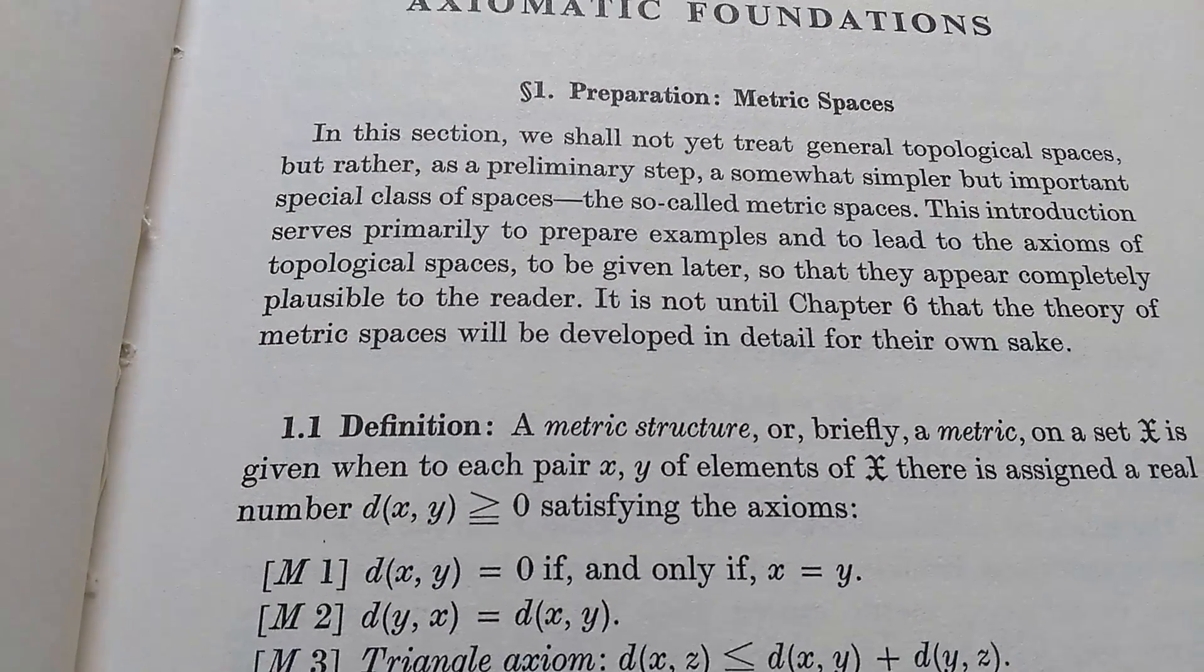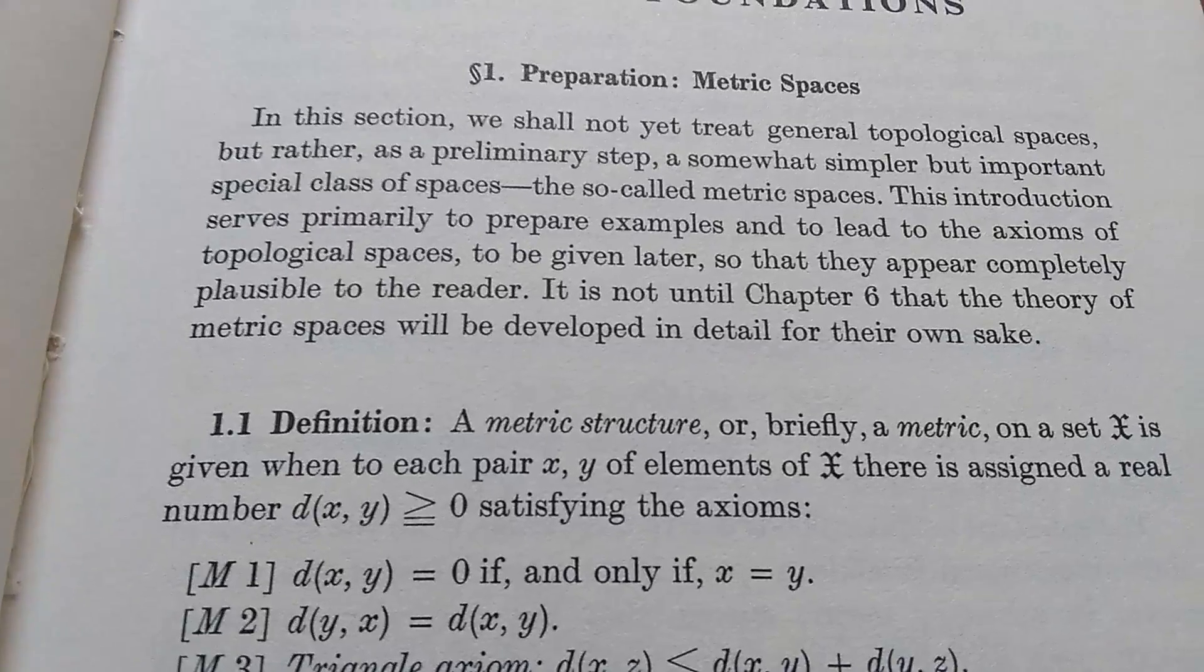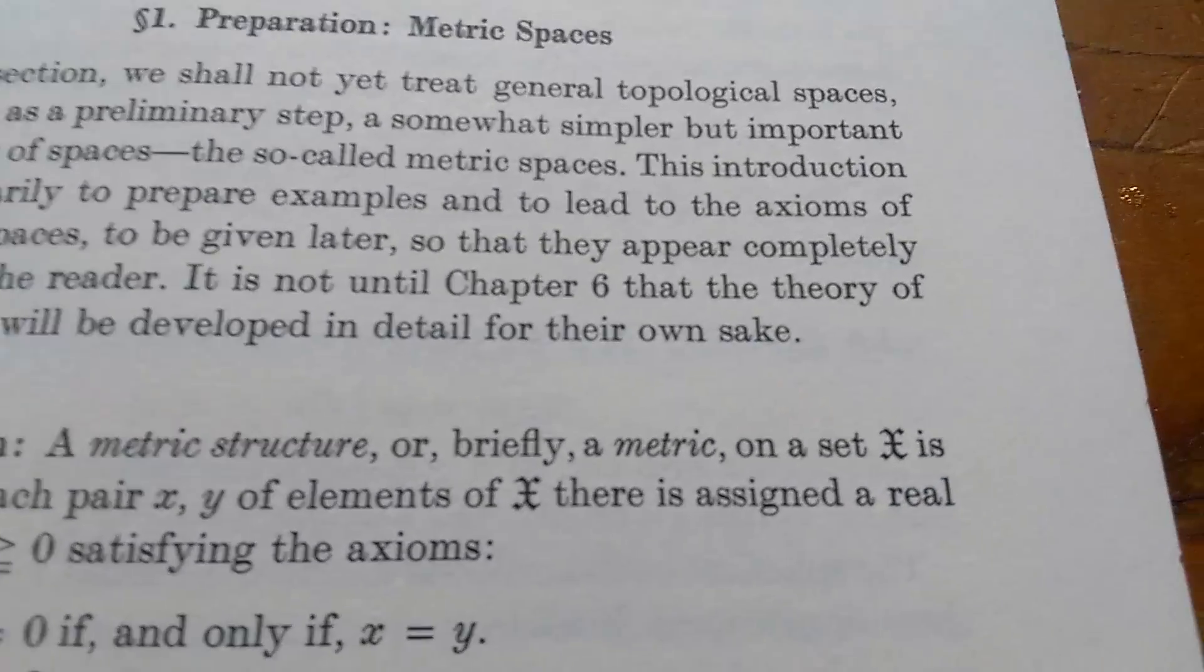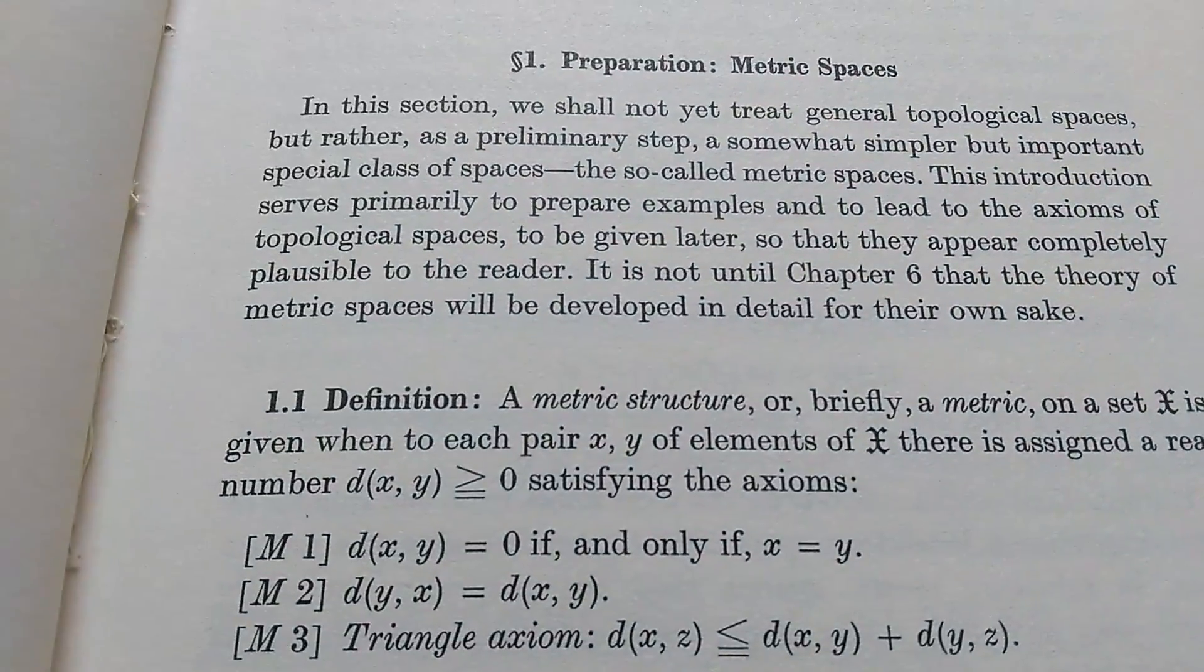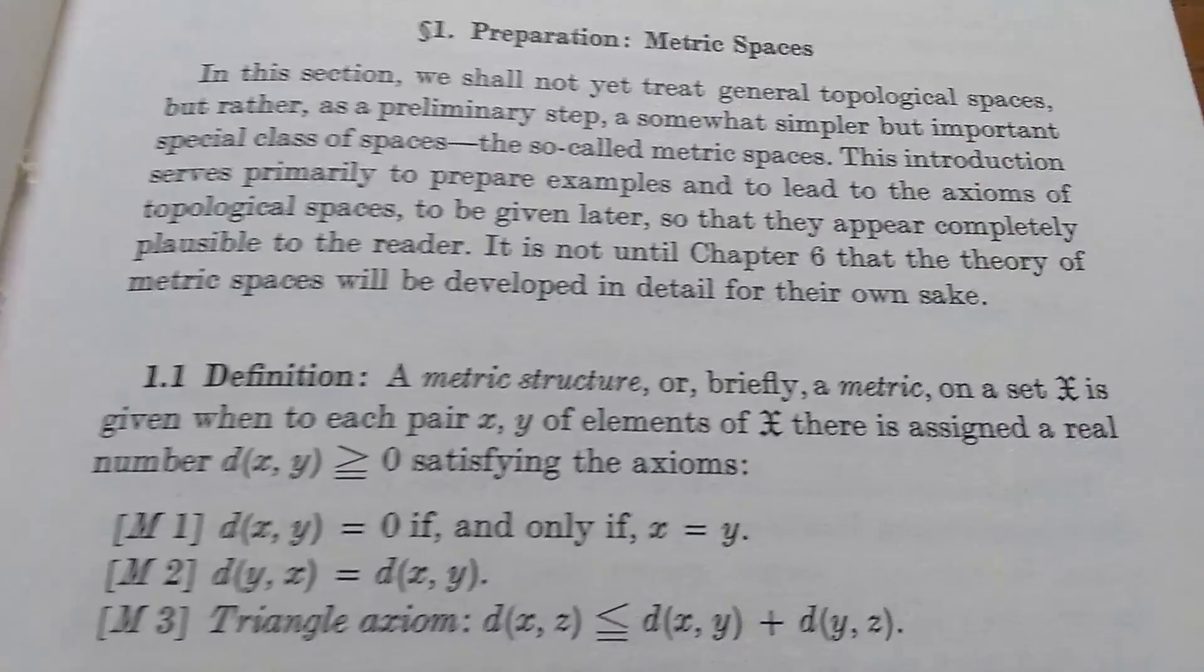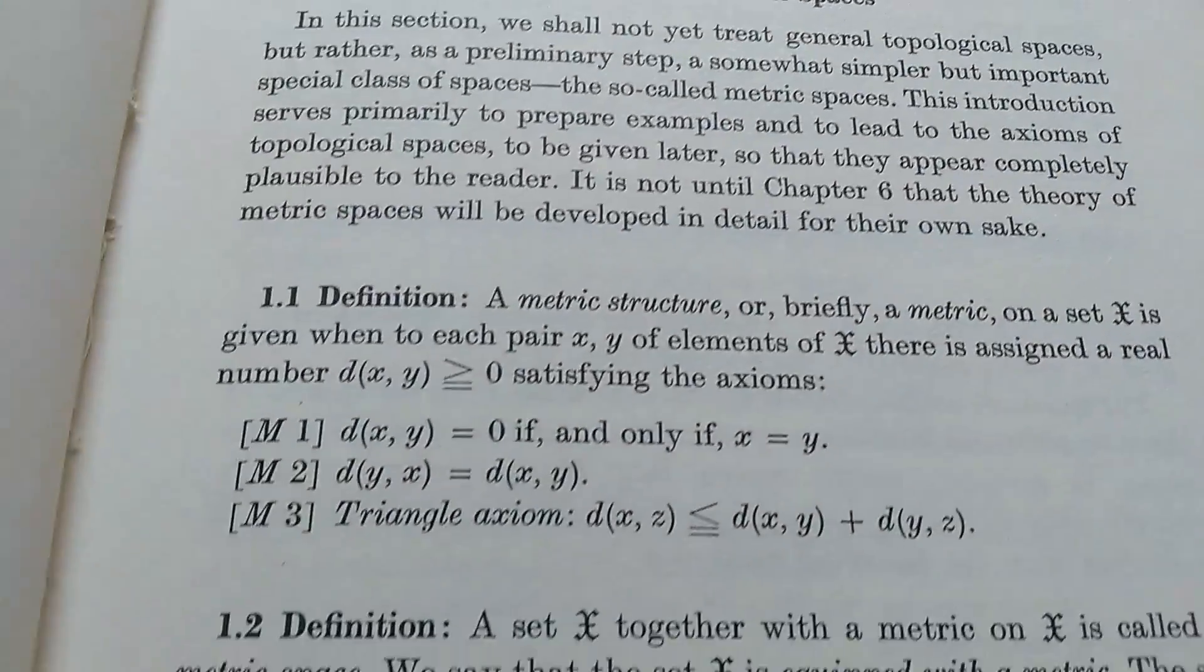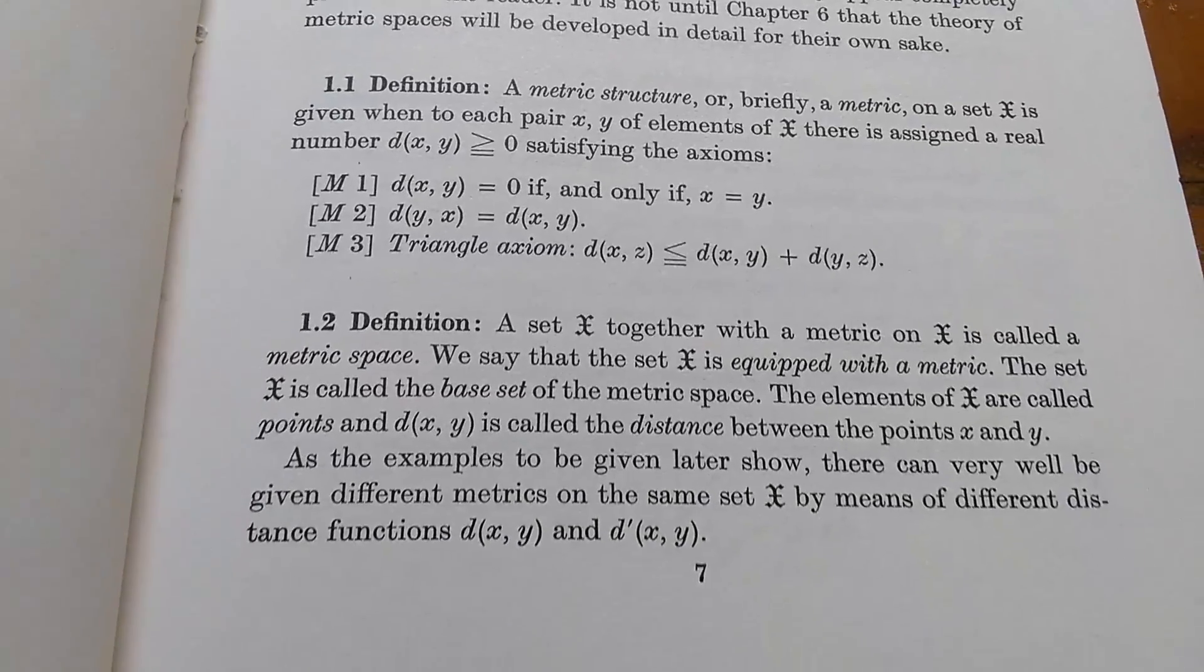So it talks about a metric structure, or briefly, a metric on a set x. Notice the variables—I think those are the German letters. It is given to each pair x, y, an element of x, if there is a sign, etc. So he goes through the definitions.